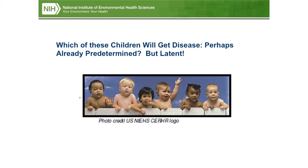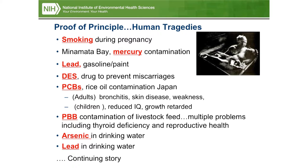Which of these children will get disease — is it predetermined or latent? At NIEHS we look at proof-of-principle human tragedies. We use smoking during pregnancy as our gold standard. We have the Minamata Bay mercury contamination, lead removal from gasoline and paint, DES used to prevent miscarriages and its transgenerational effects, PCBs rice oil contamination in Japan, PBB contamination in Michigan livestock feed, thyroid deficiency and reproductive health problems across generations, arsenic in drinking water and food supply, and now back to lead in drinking water.